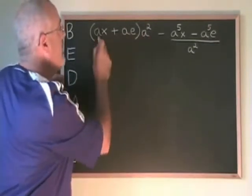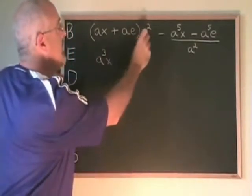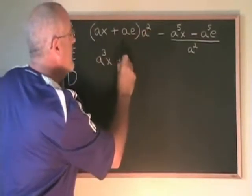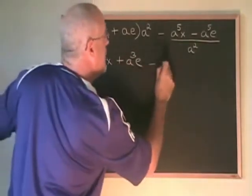a squared times ax is a cubed x. a squared times ae is a cubed e. And we copy down the rest of the question.